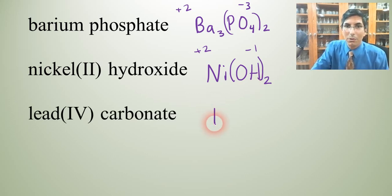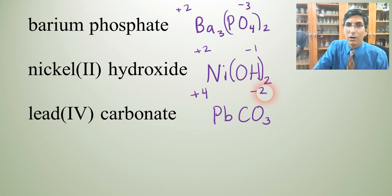Lead(IV) carbonate. Lead(IV) is Pb with a plus 4 charge. Then we have carbonate, which is CO3, with a negative 2 charge. So we've got to swap them. You'd think it would be a 2 and a 4, right? But don't forget, we have to simplify it like we did earlier with the lead(IV) oxide. So we're going to have to make this not a 2 and a 4, but a 1 and a 2, like this. And of course, parentheses around the carbonate.